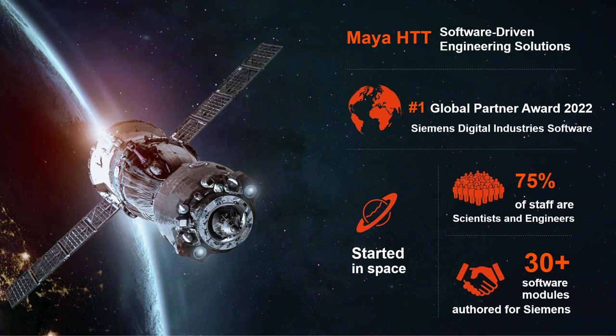We actually author over 30 software modules for Siemens. That means our developers actually write the code and we're the world experts with those. 75% of our staff are scientists and engineers. And we started in space. That's where we started about 40 years ago. And then from there have branched off into almost every engineering industry there is.